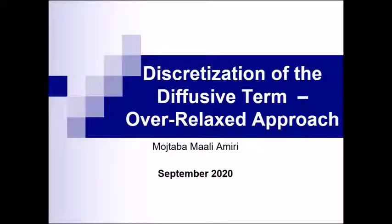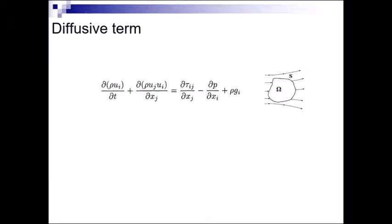Hi everyone. Today I'm going to talk about the discretization of the diffusive term in the Navier-Stokes equations. The Navier-Stokes equations in differential form is written like this. The diffusive term, or the viscous term, is shown here inside this red square.